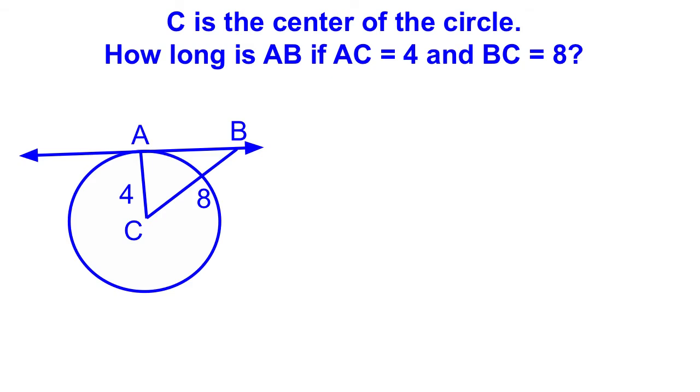We're going to use the tangent radius theorem to do this problem. Here we know that AC equals 4 and BC equals 8. We're going to solve for side AB in the triangle.